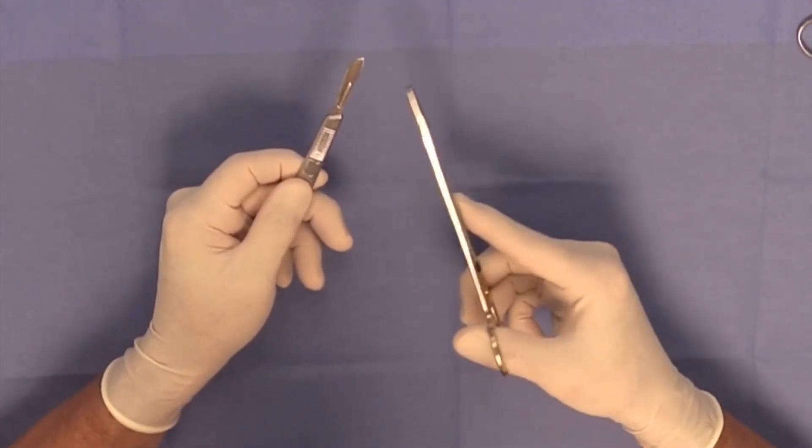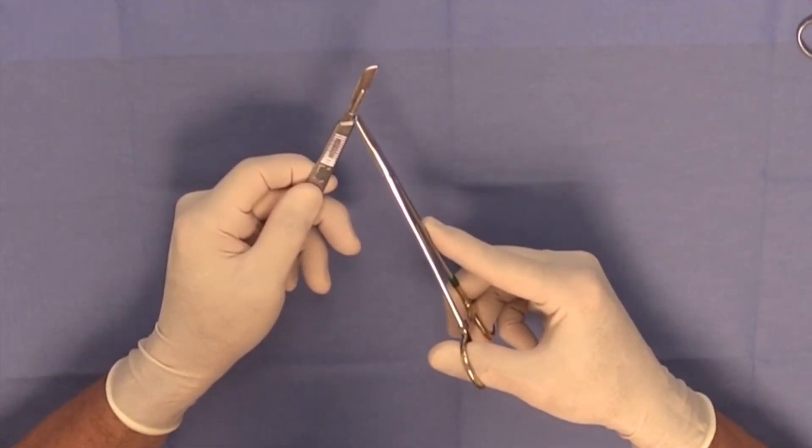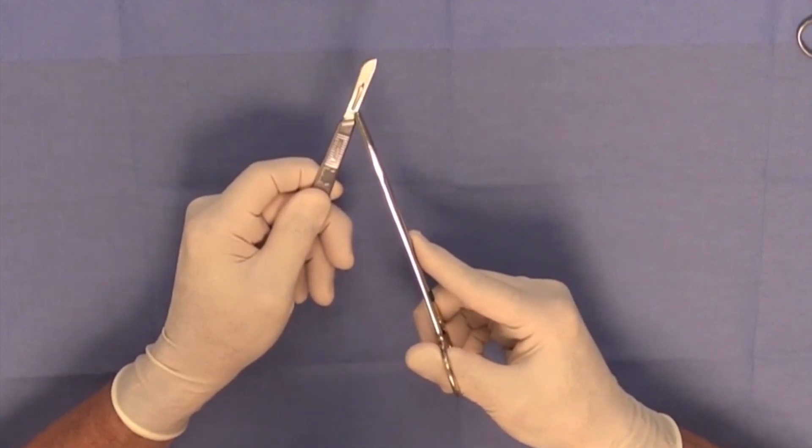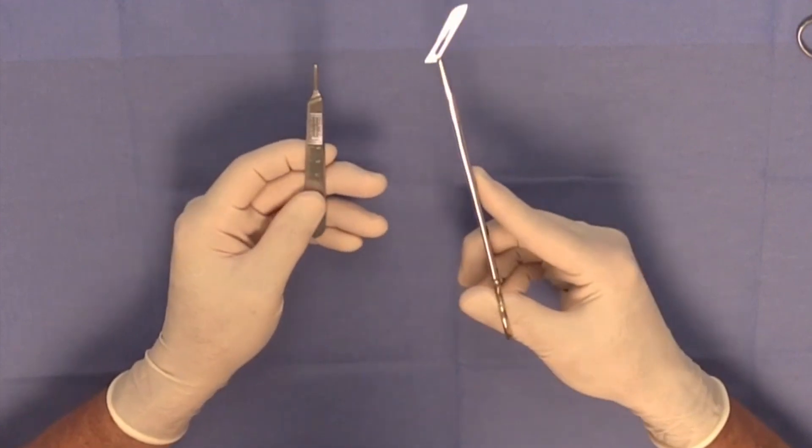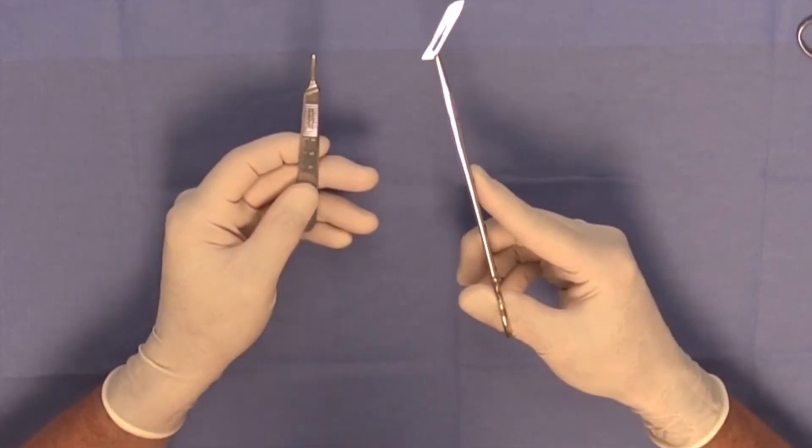To remove the scalpel blade, again, you could do this with your fingers, but it's cumbersome and dangerous. You just simply lift up on the back of the blade and slide it off carefully using an instrument that's not the tips of your fingers.